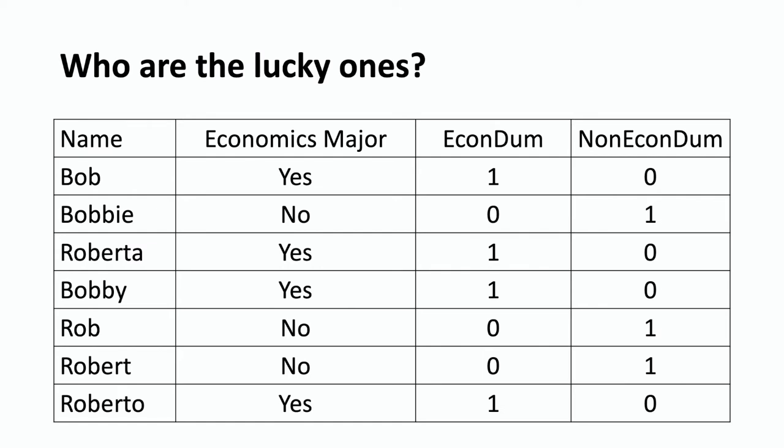Going back to our data set, I can show you how we take those two categories and code them as dummy variables. The column labeled EconDum is a dummy variable that tells us if you're an economics major — using zeros and ones. The last column is labeled Non-EconDum, a dummy variable telling us that you're not an economics major. So EconDum equals one for Bob, zero for Bobby, one for Roberta and Bobby, zero for Rob and Robert, and one for Roberto. Non-EconDum is zero for Bob, one for Bobby, one for Rob, and one for Robert.